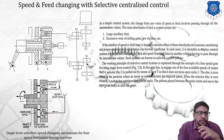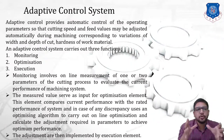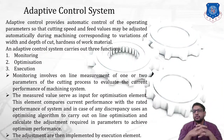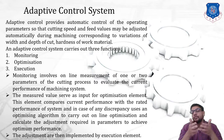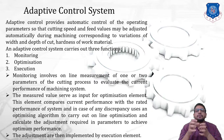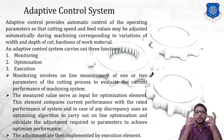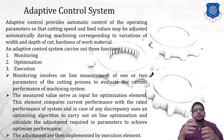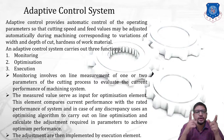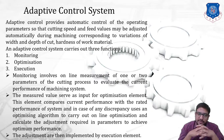The adaptive control system provides automatic control of operating parameters so that cutting speed and feed values may be adjusted automatically during machining, corresponding to changes in width and depth of cut along with hardness of the work material. Optimization takes place automatically — the operator doesn't have to do anything. Once set, it performs three functions: monitoring, optimization, and execution.